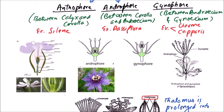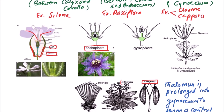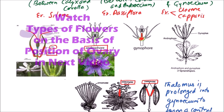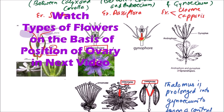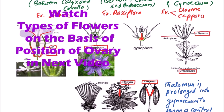We can observe the Anthophore here — it is elongated between the calyx and the corolla; the petals come out from this region and this is the origin for sepals. The Androphore is observed between the corolla and the androecium. These are Carpophores. In the case of Gynetopsis, we can observe both the Gynophore and the Androphore.